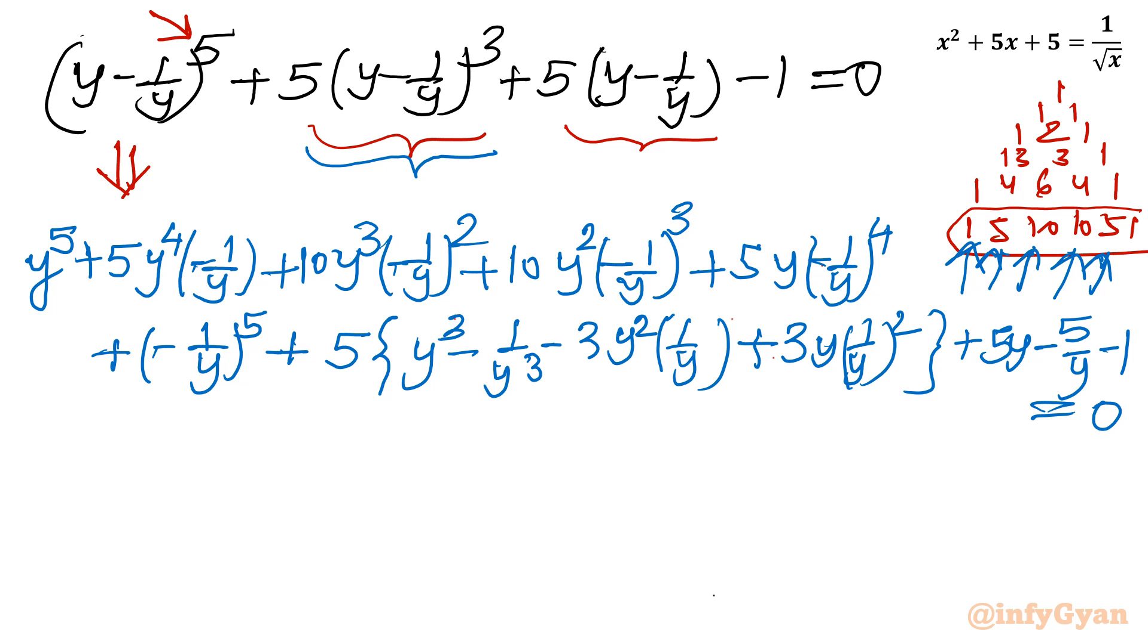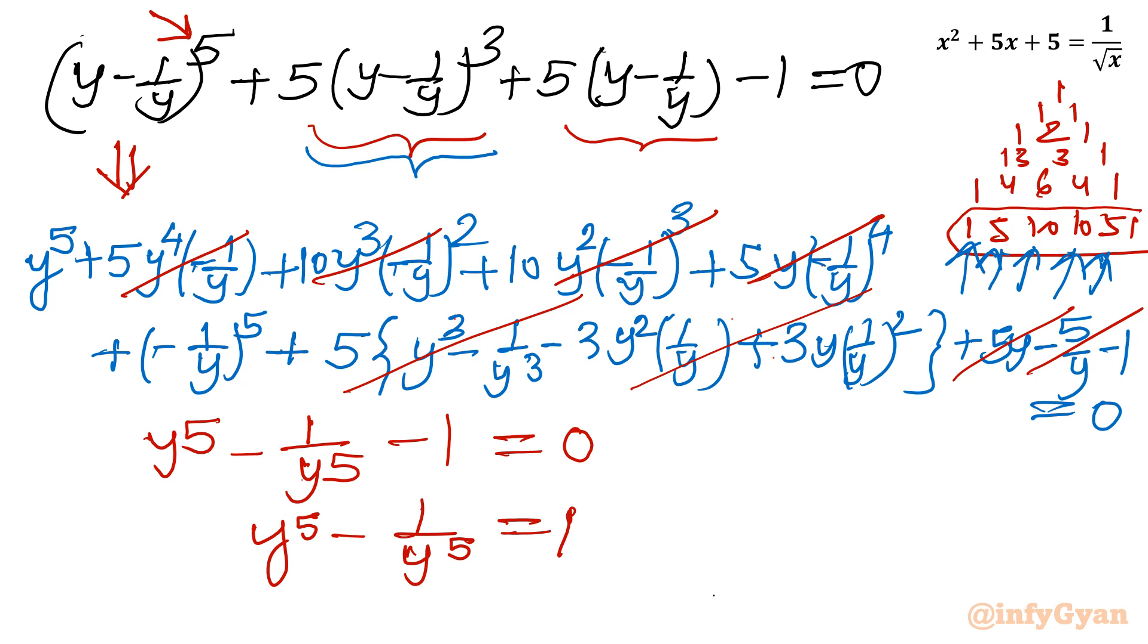Now if you will simplify, see most of the terms will be cancelled out. So which term will be left? These all terms will be over. Only terms will be left. That would be y⁵, the very first term, minus 1/y⁵, and -1 = 0. This is the advantage of our substitution. Now I will consider y⁵ - 1/y⁵ = 1.